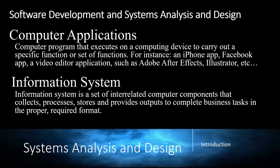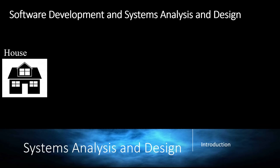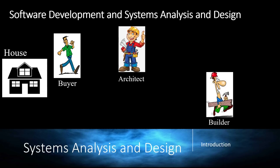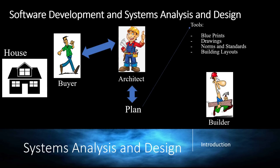To understand how information systems apply to the software development lifecycle, let's imagine an analog situation. Let's say you want to build a house. You have three players: the buyer, the architect, and the builder. The buyer communicates his vision to the architect, who advises the buyer on what can and cannot be done. Based on their agreements, the architect elaborates a plan containing blueprints, drawings, norms, standards, and building layouts, and uses those tools to communicate with the builder, who then builds the house.